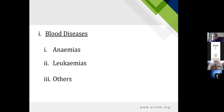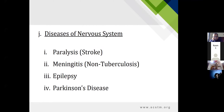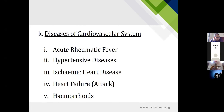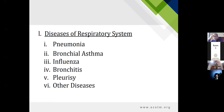Blood diseases prevalent in Pakistan and the region include anemia, leukemias, and others. In the nervous system: paralysis from stroke or cerebrovascular accidents, non-tuberculous meningitis, epilepsy, and Parkinson's disease. Cardiovascular diseases that are contextually prevalent include acute rheumatic fever, hypertensive diseases, ischemic heart disease, heart attack, heart failure, and hemorrhoids.